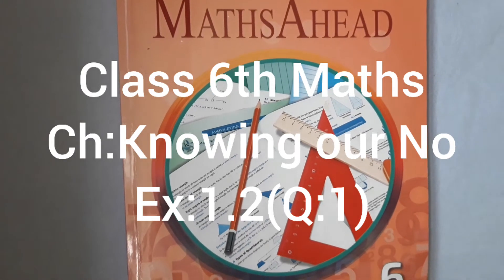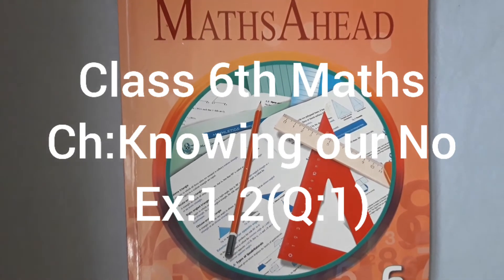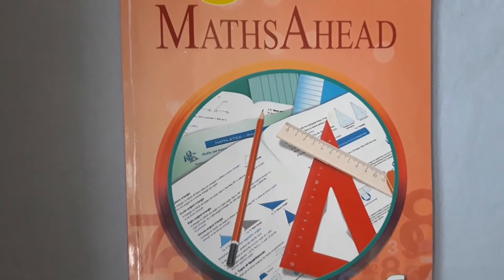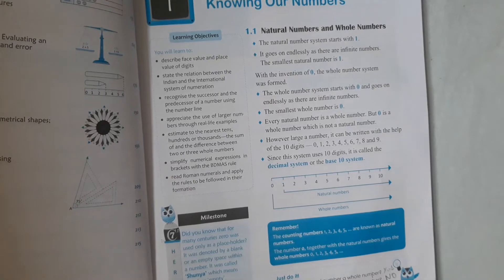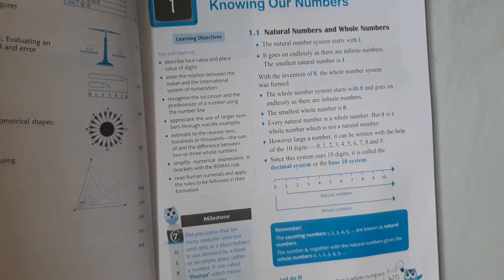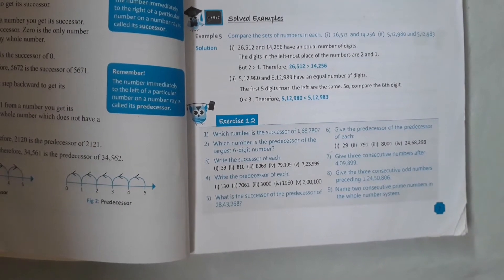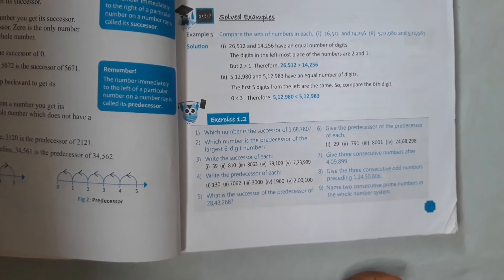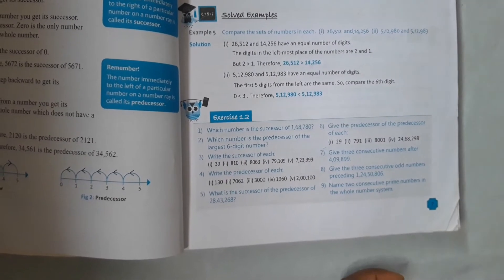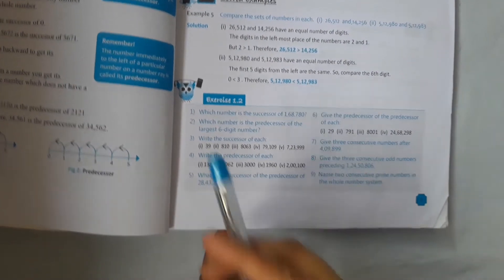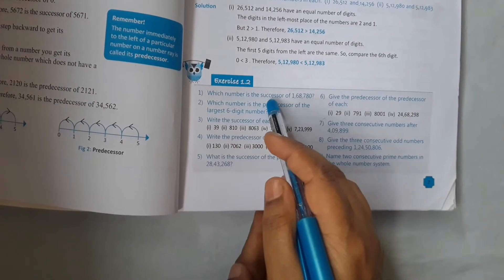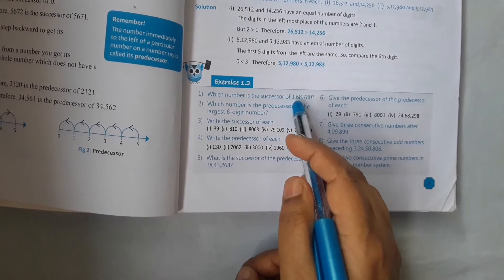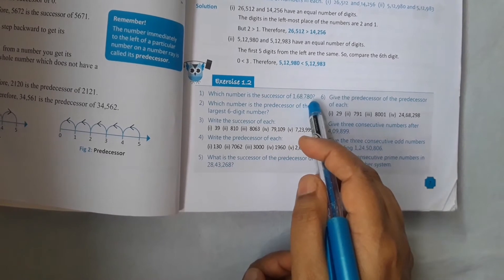Hello children, this is Class 6 Maths. Chapter name is 'Knowing Our Numbers', Exercise 1.2. The first question is: which number is the successor of 1,68,780?